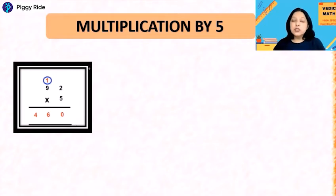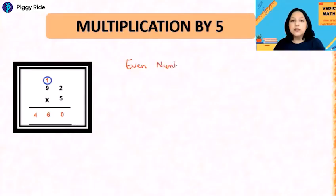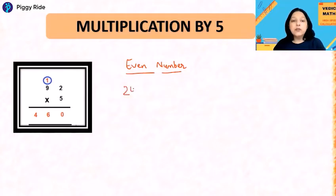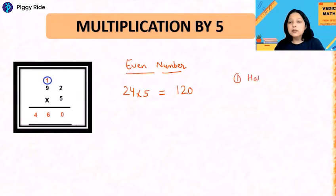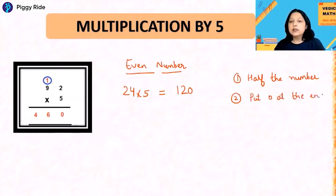Whenever you do multiplication of any number by 5, only two things you have to keep in mind: whether the number is odd or even. If you have any even number and you are multiplying it with 5 — suppose you want to multiply 24 with 5 — quickly half the number in your mind and put one zero at the end. So 24 half is 12, put one zero at the end, so the answer is 120. Step 1: half the number. Step 2: put zero at the end.